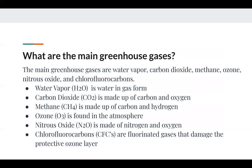The main greenhouse gases are water vapor, carbon dioxide, methane, ozone, nitrous oxide, and chlorofluorocarbons. Water vapor is H2O — it's water in gas form, and this is what forms clouds and rains water back down onto earth. Carbon dioxide is CO2, made up of one carbon and two oxygen molecules, and it's part of the carbon cycle, coming from decaying and living organisms.